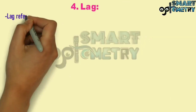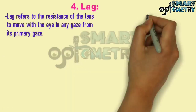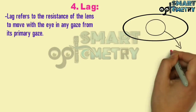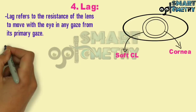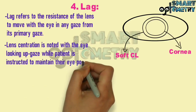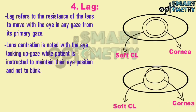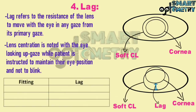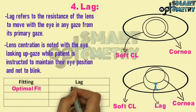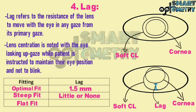4) Lag: Lag refers to the resistance of the lens to move with the eye in any gaze from its primary gaze. The lens position is noted with the eye looking in up gaze while the patient is instructed to maintain their eye position and not blink. In an optimal fit the lag will be 1.5 mm; in a steep fit it will be little or none; in a flat fit it will be more than 2 mm.